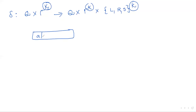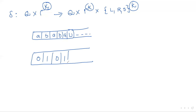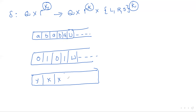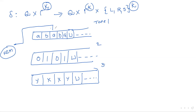Assume tape one contains: a, b, a, b, a, blank, and so on. Tape two contains: 0, 1, 0, 1, blank, and so on. Tape three contains: y, x, x, y, blank, and so on. This multi-tape Turing machine has three tapes, and each tape has its own tape head at a certain position — for example, the head of tape one points to a specific cell, and similarly for tape two and tape three.